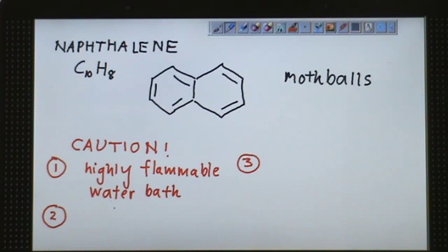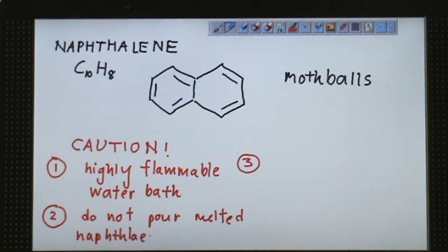Number two, you should not pour the used or melted naphthalene into the sink. Do not pour melted naphthalene into the sink because it will clog the drains and freeze. Take note of that.